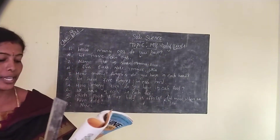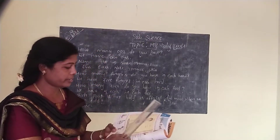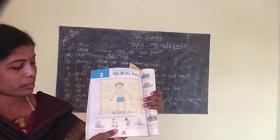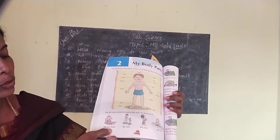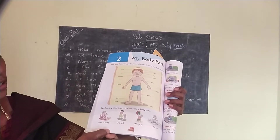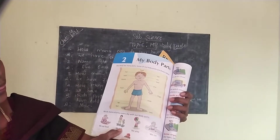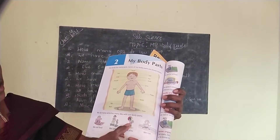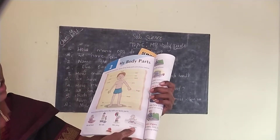We do so many activities every day with our body parts. Here, some activities are given. Look here — the boy is eating food. We eat food with our mouth. We can use our mouth to eat, and we can use our mouth to talk to each other. We can use our hands and legs to play. We use our legs to run.